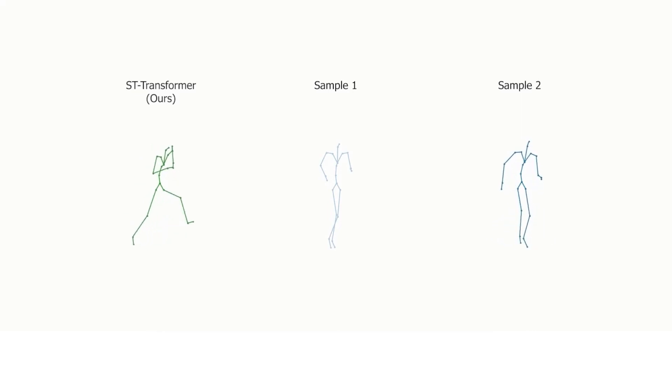Note how the transition is both smooth and plausible, which is a behavior that we observe to emerge naturally with our model, without explicitly enforcing this during training.